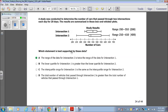Which statement is best supported by these data? Let's look at one. The range of the data for intersection two is twice the range of the data for intersection one. Intersection one, the data seems to range from 350, the minimum, to 550, the maximum. So between 350 and 550, that's 200.